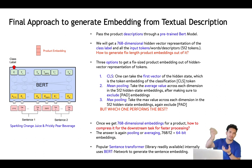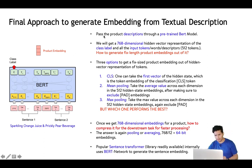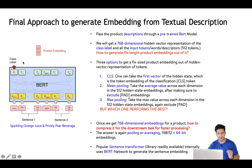We want to compress entities into 32, 64, or 128-bit embeddings. As the first step, we pass the item description — such as 'sparkling orange juice and prickly pear beverage' — through the BERT model. For each token, one hidden vector representation will be produced. Using the BERT Base model, each word representation will be of 768 dimensions.